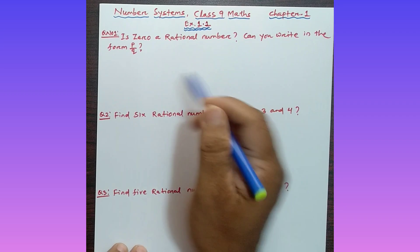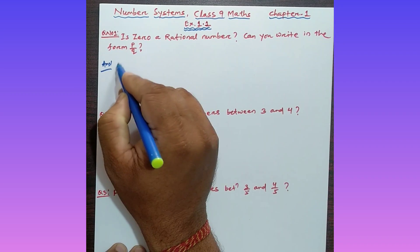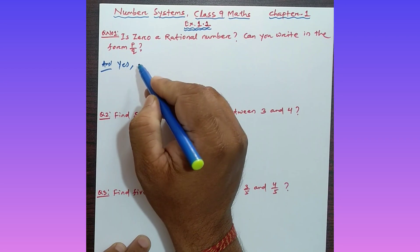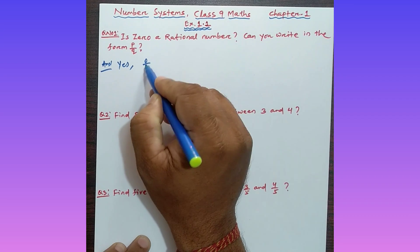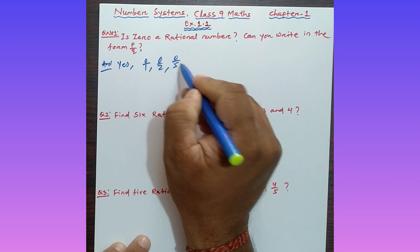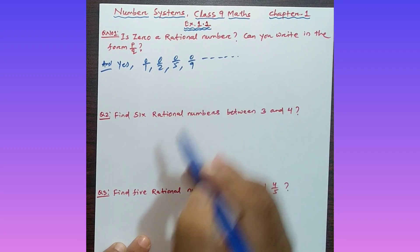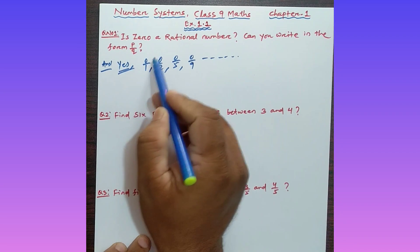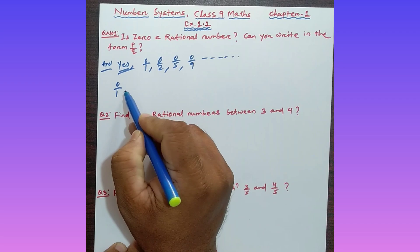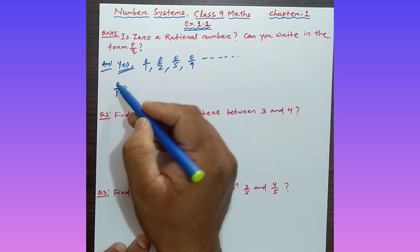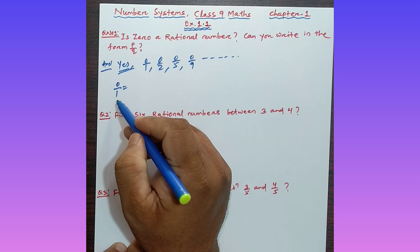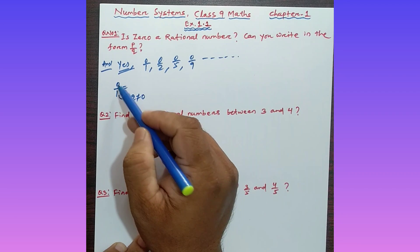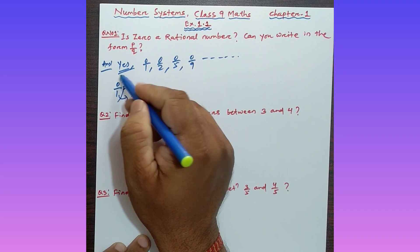Question number one: Is zero a rational number? Can you write it in the form of p by q, where p and q are integers and q is not equal to zero? Yes, absolutely — zero is a rational number. Zero can be written as 0/1, 0/2, 0/5, 0/9, and so on. It can be written in the form of p by q where p and q are both integers and q is not equal to zero.